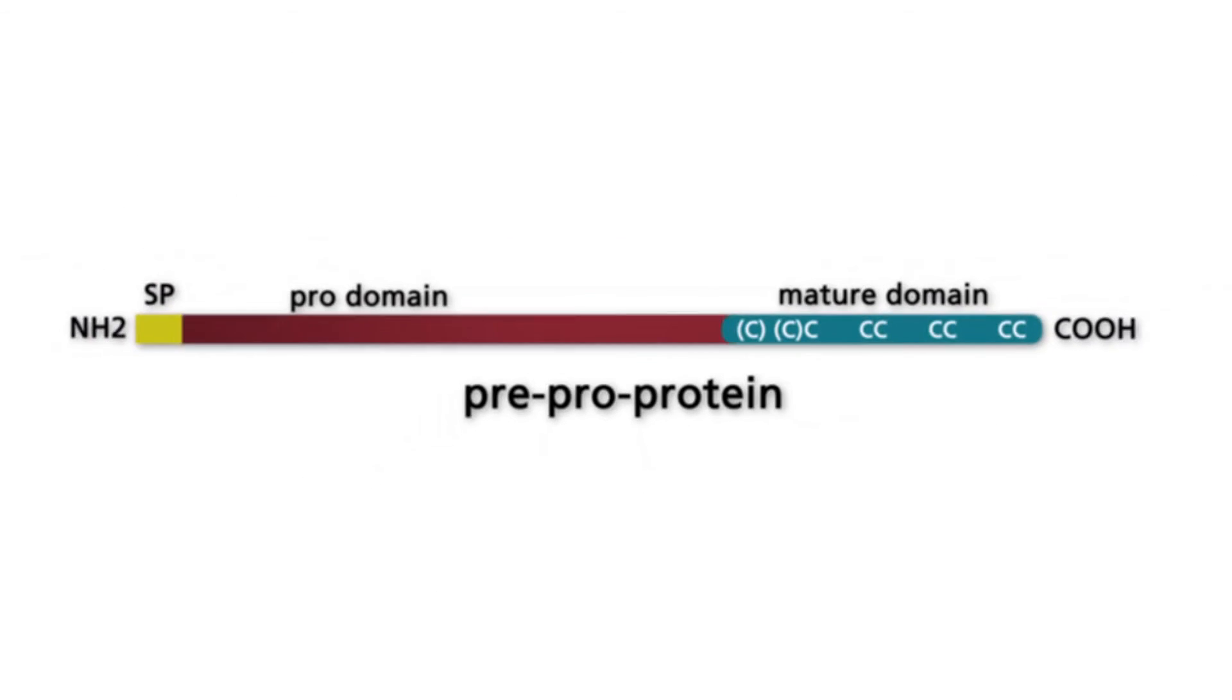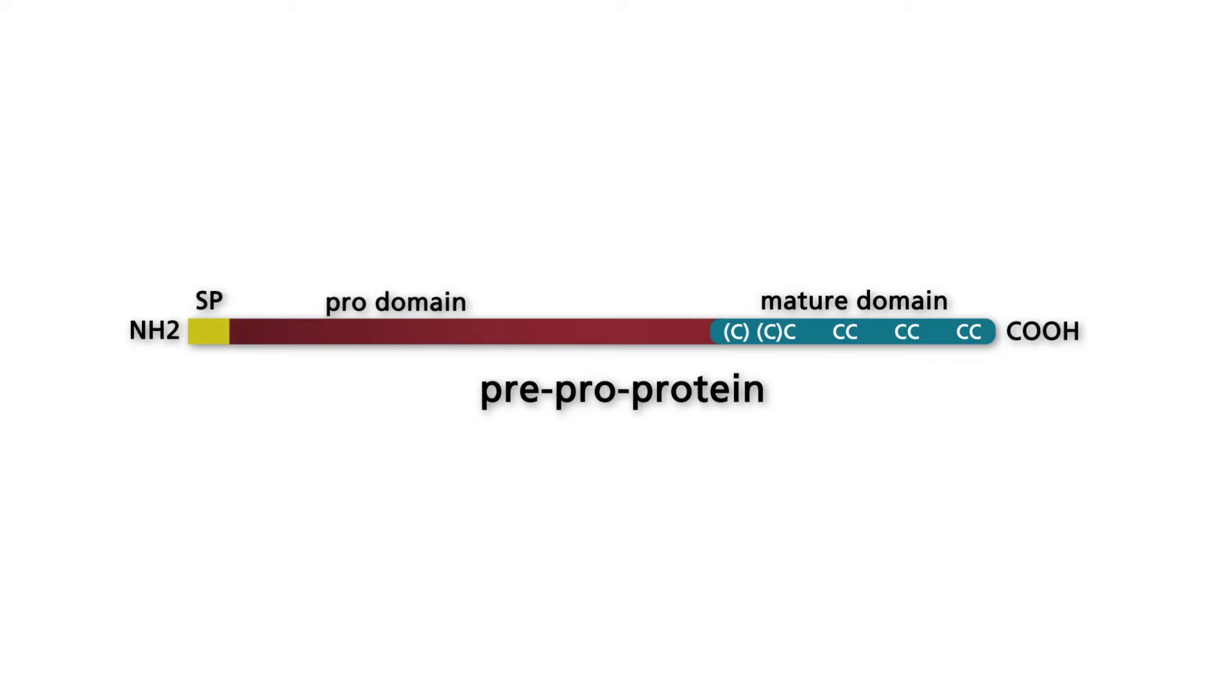All members of the TGF beta superfamily are synthesized as pre-pro proteins, which contain a signal peptide, a pro domain, and the mature domain.